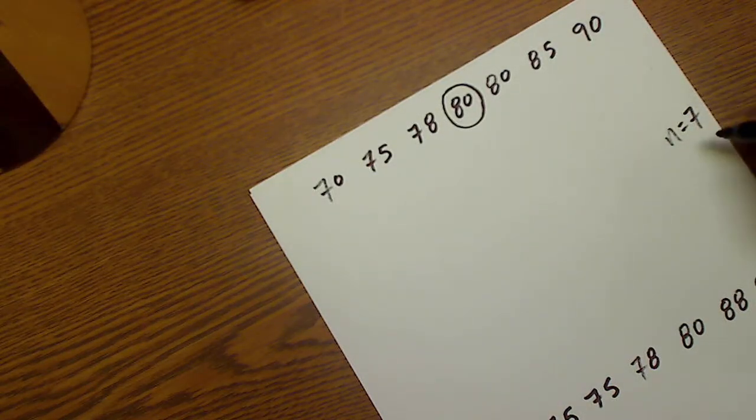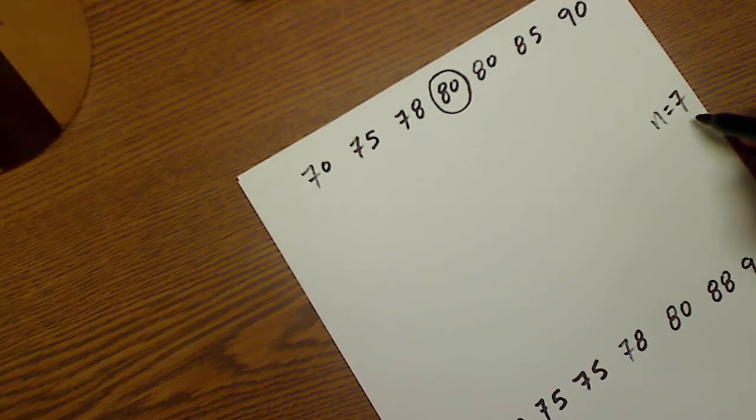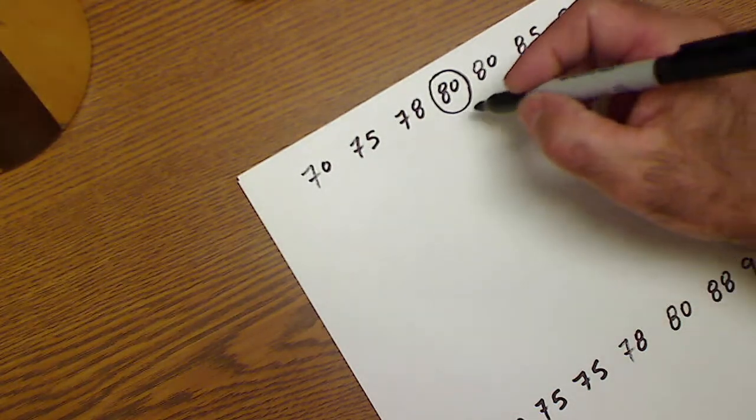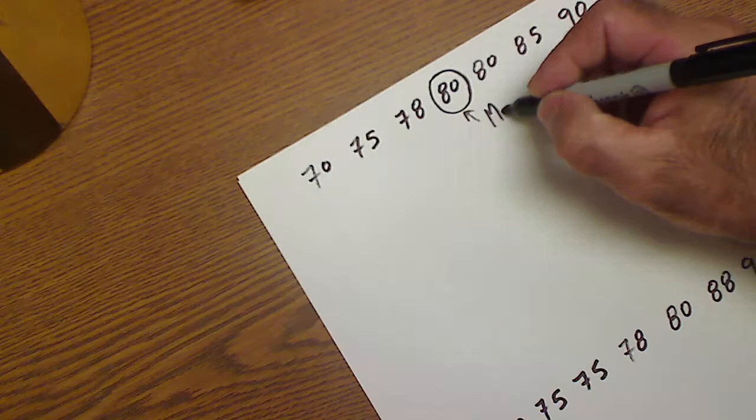Oops, there's the bell. I better hurry. I have seven values. Anytime it's odd, it'll be easy to find that median. Median is the middle number.